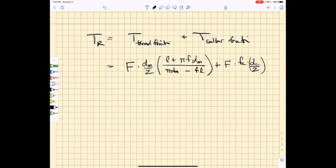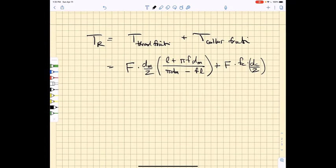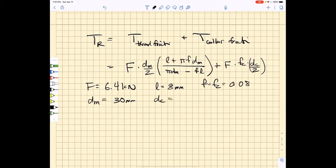If we plug all of those things into this equation, including the force requirement that was imposed on us of 6.4 kilonewtons, so we use F equals 6.4 kilonewtons, the lead equals 8 millimeters, the coefficient of friction which is equal to the collar coefficient of friction is 0.08, we calculated that the mean diameter was 30 millimeters, and the collar diameter is 40 millimeters. We plug all of that into the equation above and we get that the torque required to raise against the 6.4 kilonewton load is 26 newton meters.